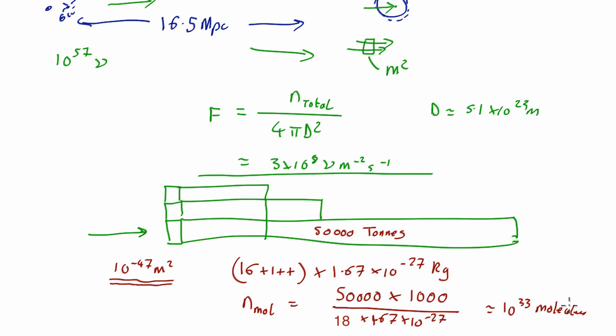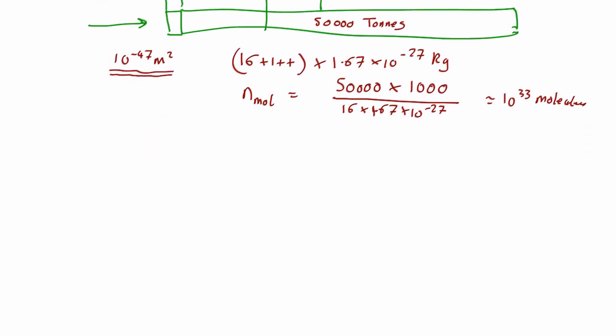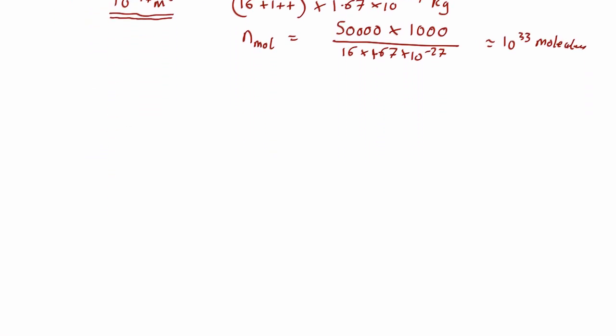Which is a lot. So we have a flux of 3 × 10⁸ neutrinos going past 10³³ molecules. So how many are going to actually be intercepted and cause a flash of light or something we can measure? Well, that number of interactions is going to be equal to the cross section times the number of molecules times the flux.